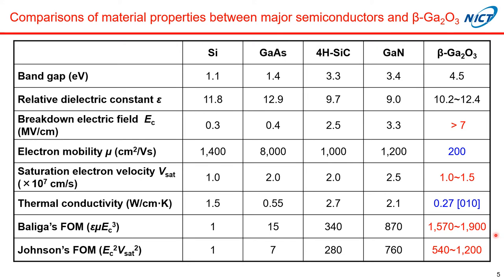But today I'm going to talk about high-frequency gallium oxide transistors, so the Johnson's figure of merit is much more important. If we calculate the Johnson's FOM, as you see, it's almost the same as that of gallium nitride. But in case of high-frequency applications, heat dissipation is much more important than for power devices. Therefore, this low thermal conductivity causes severe degradation of device performance in gallium oxide FETs. I think gallium oxide high-frequency FETs don't fully benefit from the Johnson's figure of merit as a result.